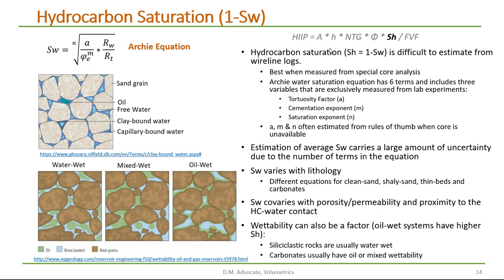Using wireline logs, we can measure the water saturation, and SH is equal to 1 minus the water saturation. Water saturation is difficult to measure from wireline logs. First off, it's best to measure the water saturation from special core analysis, but these are rare. So we use different equations to estimate the water saturation from wireline logs.